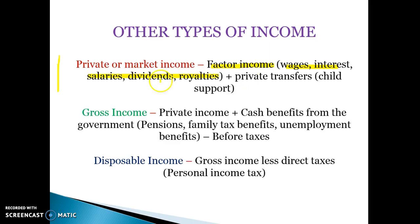The second type of income, which is a little less inequitable, is gross income. Gross income is private income plus any cash benefits from the government, such as welfare, pensions, and family tax benefits. It is before taxes, so gross income is higher than private income because it includes the cash benefits that low income earners receive. For a rich person, private and gross income are similar; for a low income earner, gross income is much higher.